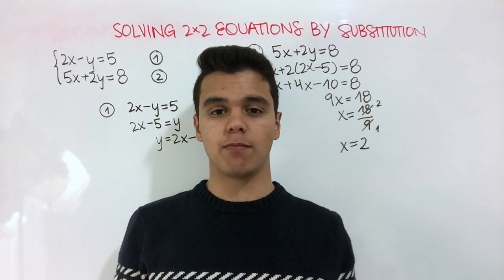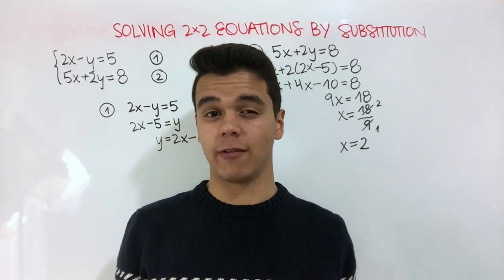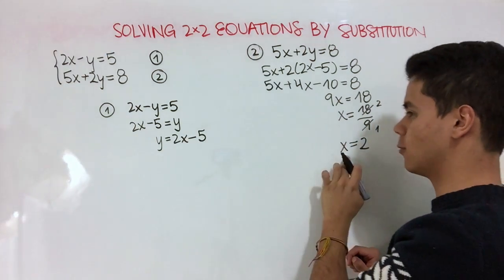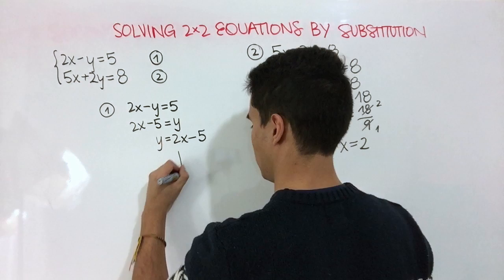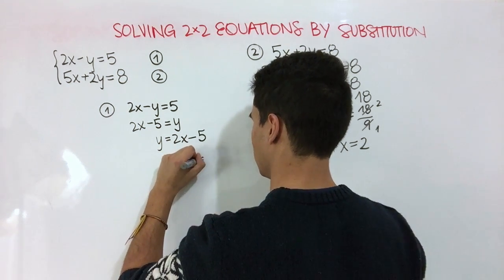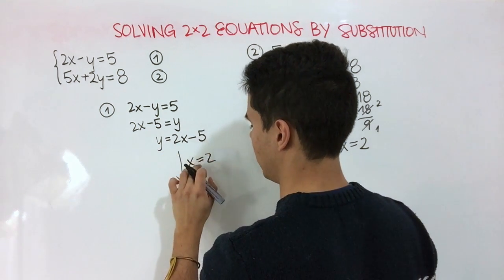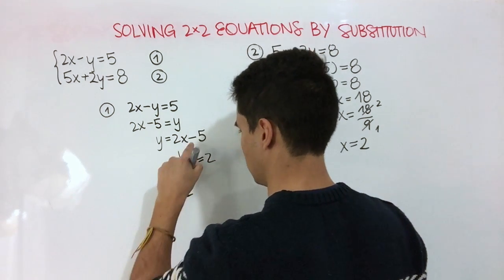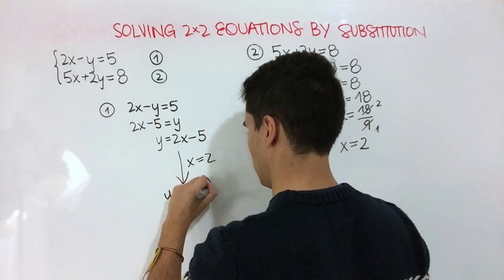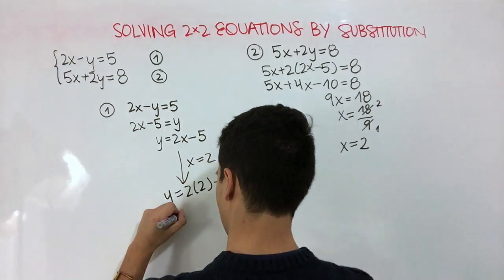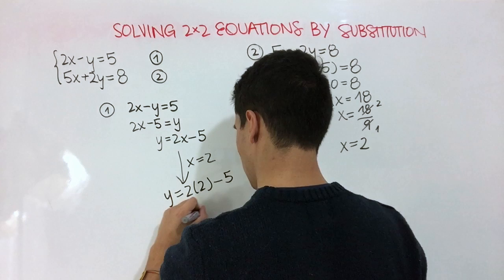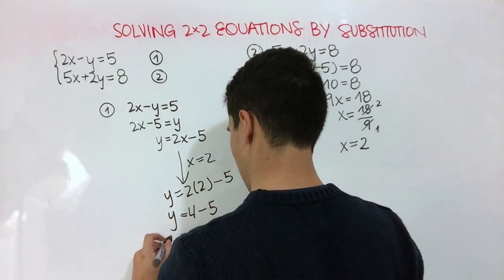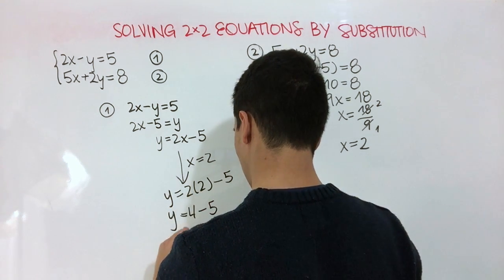Finally, we're just going to back substitute the variable of which we have already found the value. We know that x is equal to 2, so we're just going to sub in 2 for x. So y is equal to 2 times 2 minus 5. So y is equal to 4 minus 5, and y is equal to negative 1.